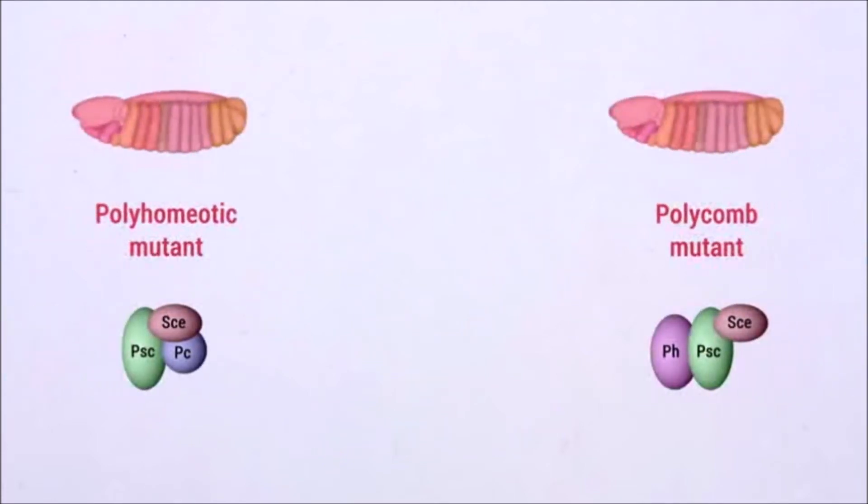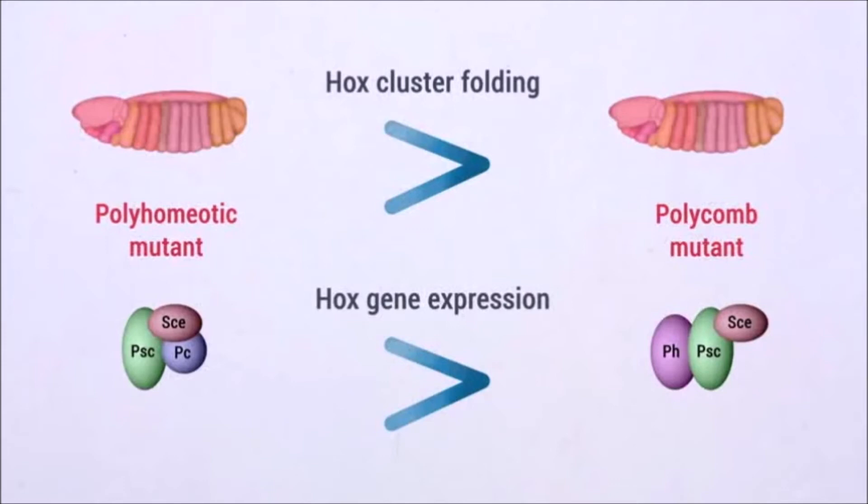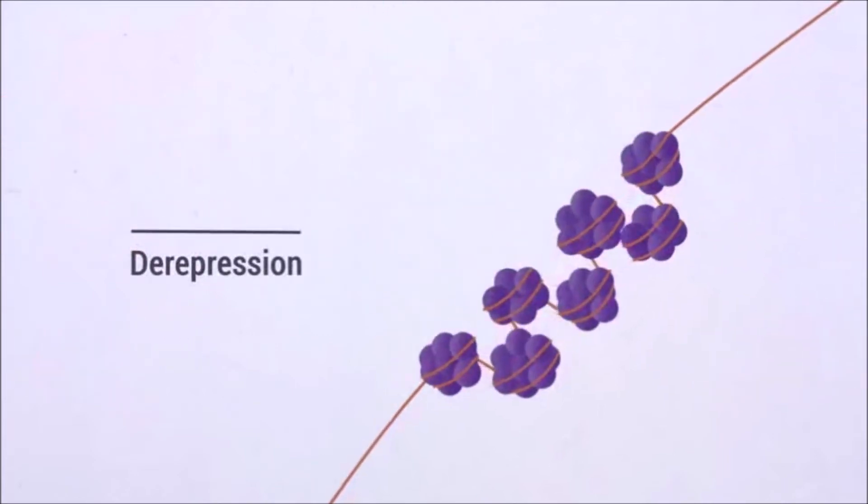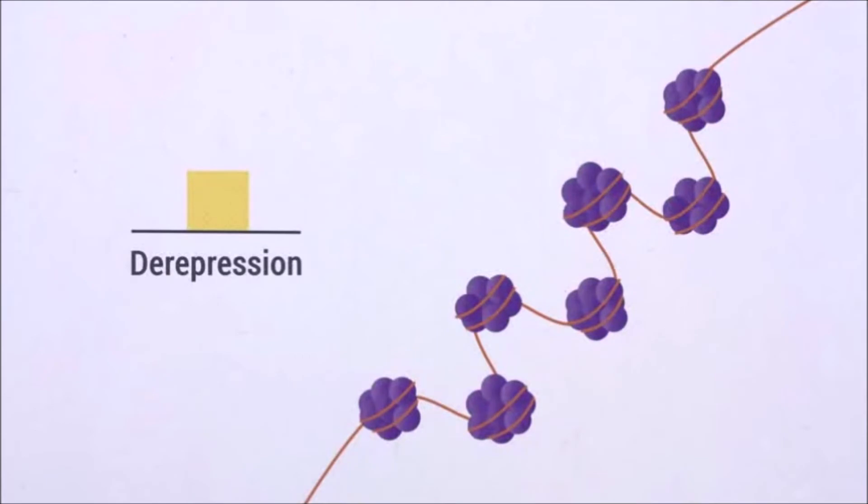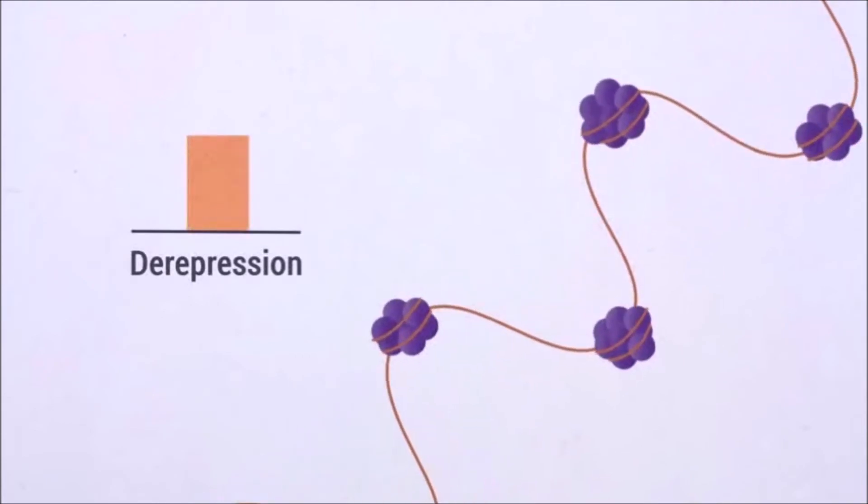Moreover, the differential effects of polyhomeotic and polycomb on Hox cluster folding match the differences in ectopic Hox gene expression observed in these two mutants, suggesting that the degree of Hox derepression in Polycomb group mutants depends on the degree of structural constraints imposed by each Polycomb group component.